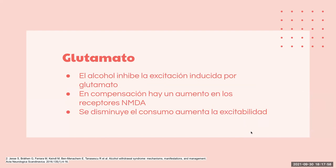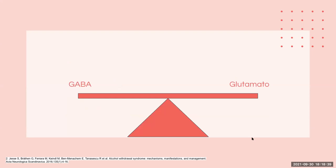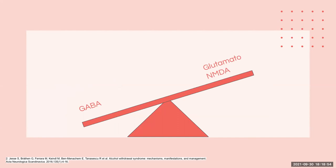A nivel del glutamato, el alcohol inhibe la excitación inducida por este neurotransmisor inhibiendo los receptores NMDA a nivel encefálico. Como compensación, el cerebro hace una regulación al alza de receptores NMDA. Cuando disminuye el consumo de alcohol, se elimina esa inhibición y los receptores NMDA sobreactivados aumentan la excitabilidad neuronal. En una persona sin alcoholismo, GABA y glutamato mantienen un equilibrio. En el síndrome de abstinencia hay una regulación a la baja de GABA y un aumento en los niveles de glutamato y receptores NMDA.